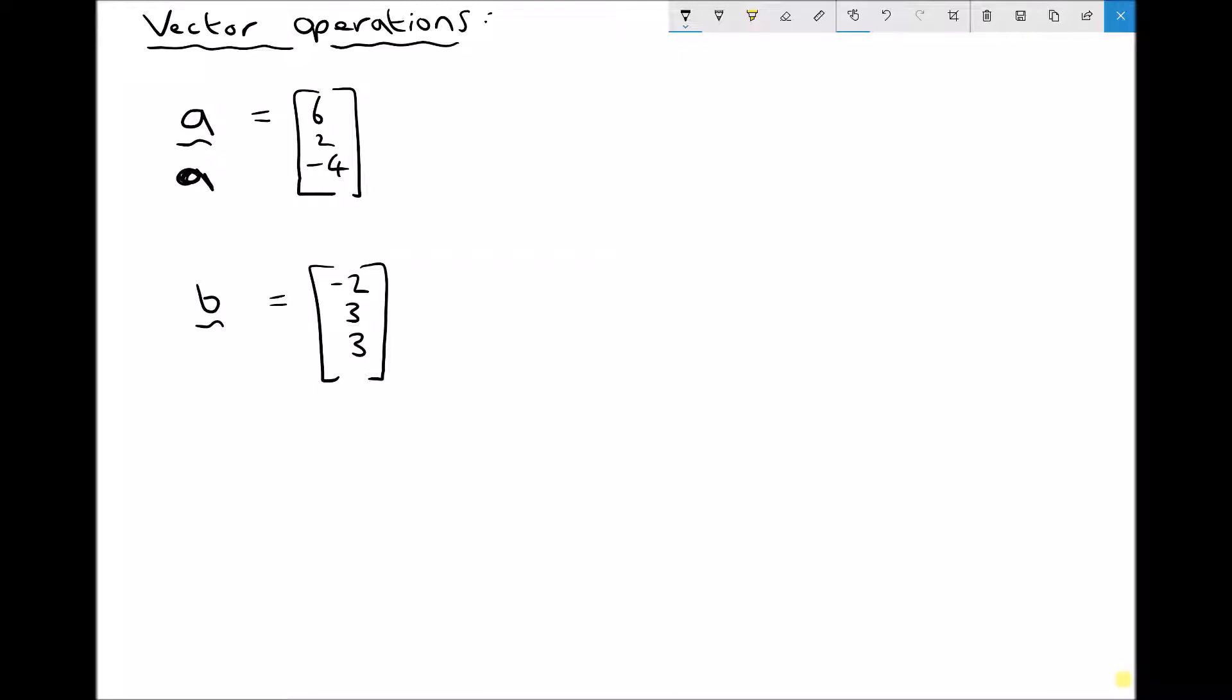So we can write vectors in a couple of ways. Here we're defining direction vectors. We don't know their start and end point. Had we known their start and end point we could have represented them as AB or BC as we did in the previous tutorial.